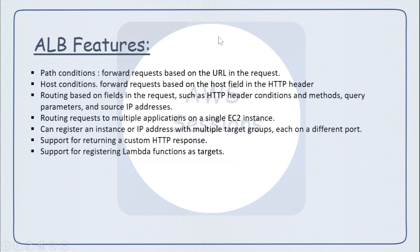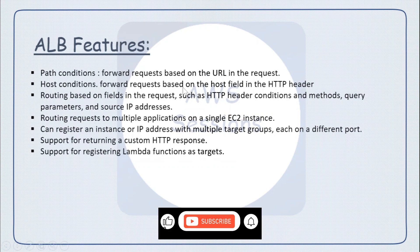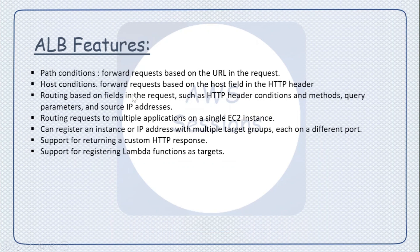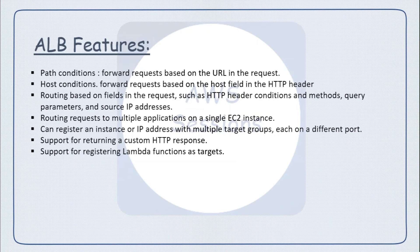Some additional ALB features: you can configure listener rules that forward requests based on URL path, host field in the HTTP header, HTTP header conditions and methods, query parameters, or source IP. You can route requests to multiple applications on a single EC2 instance, register instances or IPs with multiple target groups on different ports, add custom HTTP responses, and even register Lambda functions as targets. If you like this content, please subscribe to the channel and like this video — that will encourage me to make more videos.